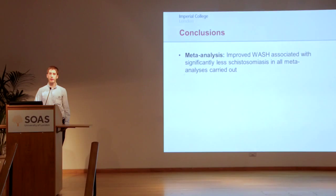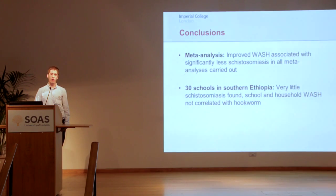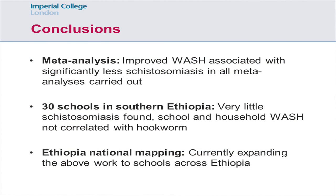In conclusion, in a meta-analysis we found that people with better water and sanitation had significantly lower odds of schistosomiasis infection. In 30 schools in southern Ethiopia, we found very little schistosomiasis and weren't able to find any correlations between sanitation and hookworm. But we're currently expanding this to a much larger set of schools.